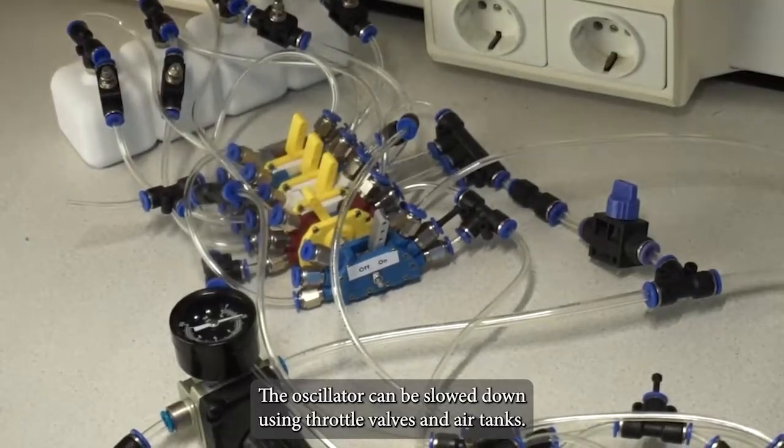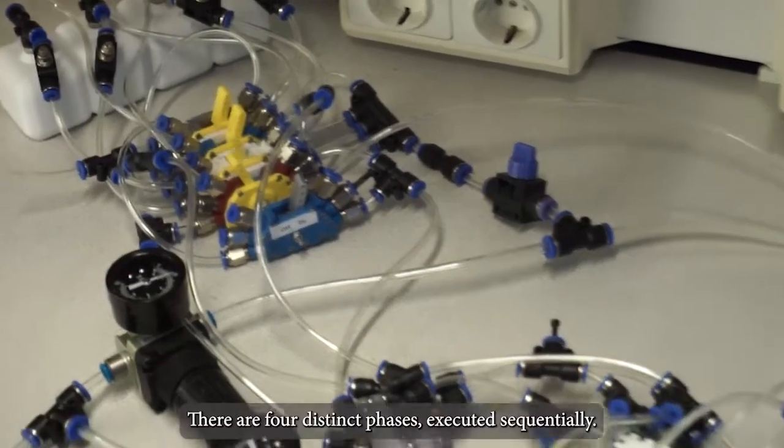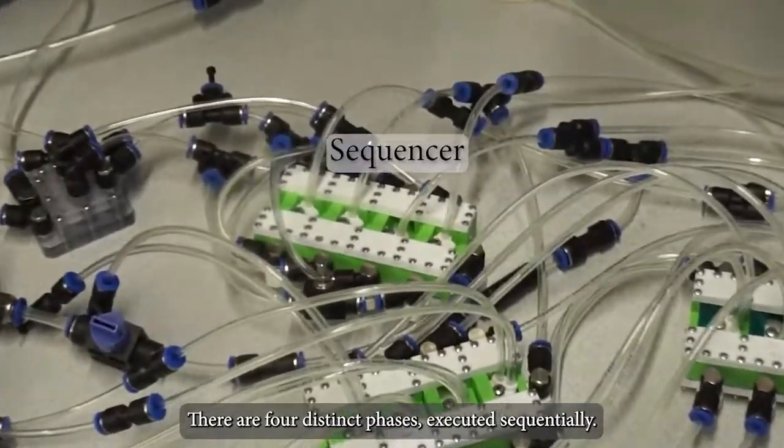The oscillator can be slowed down using throttle valves and air tanks. There are four distinct phases, executed sequentially.